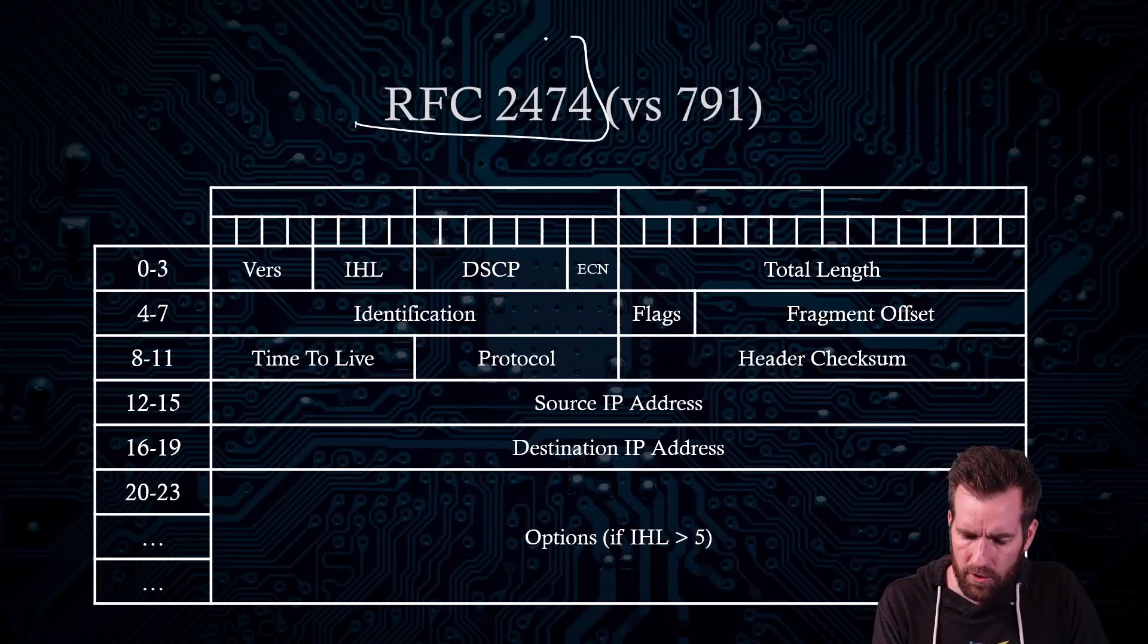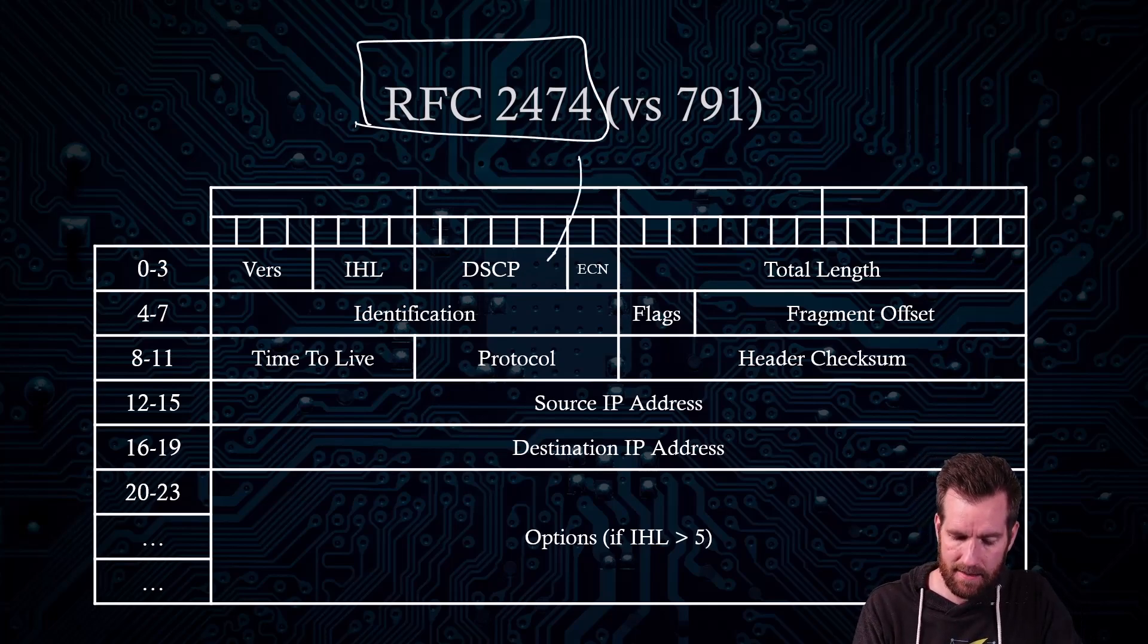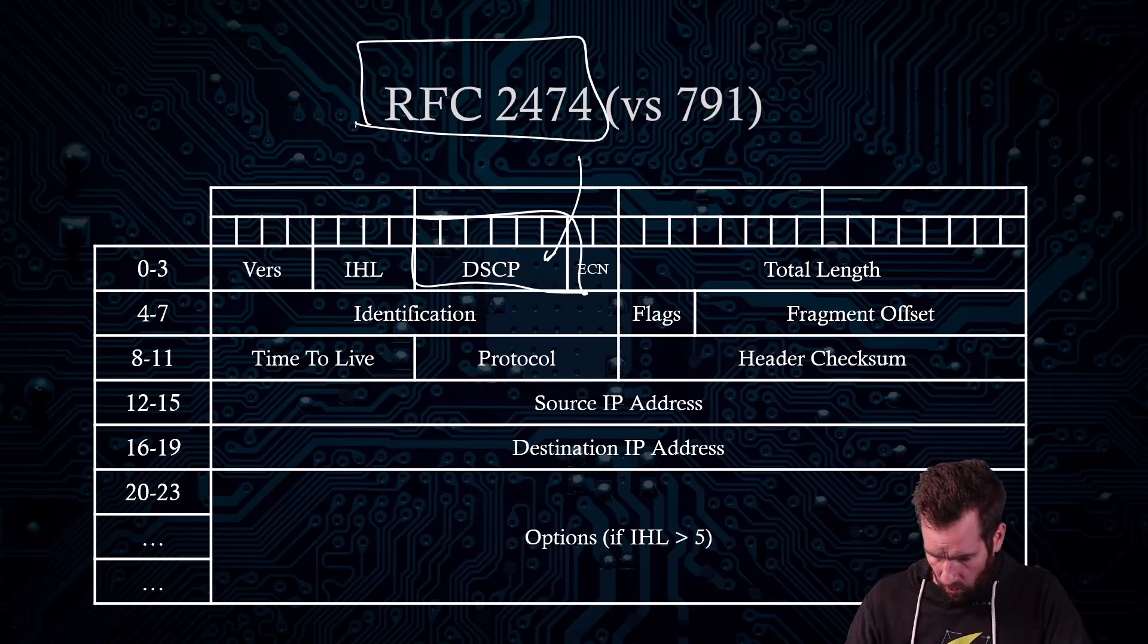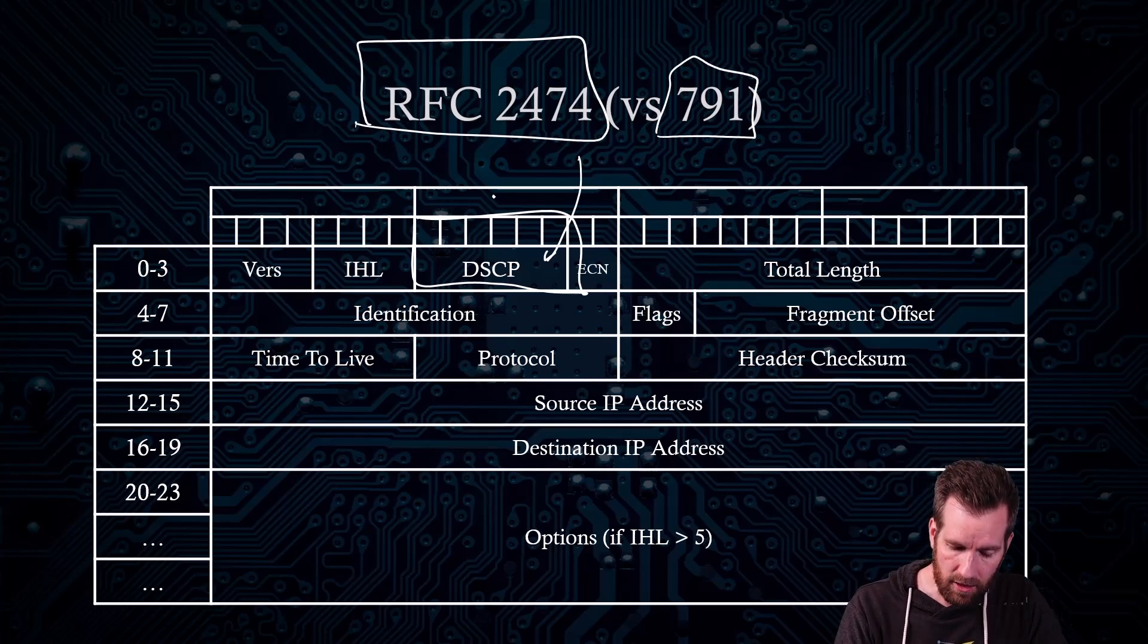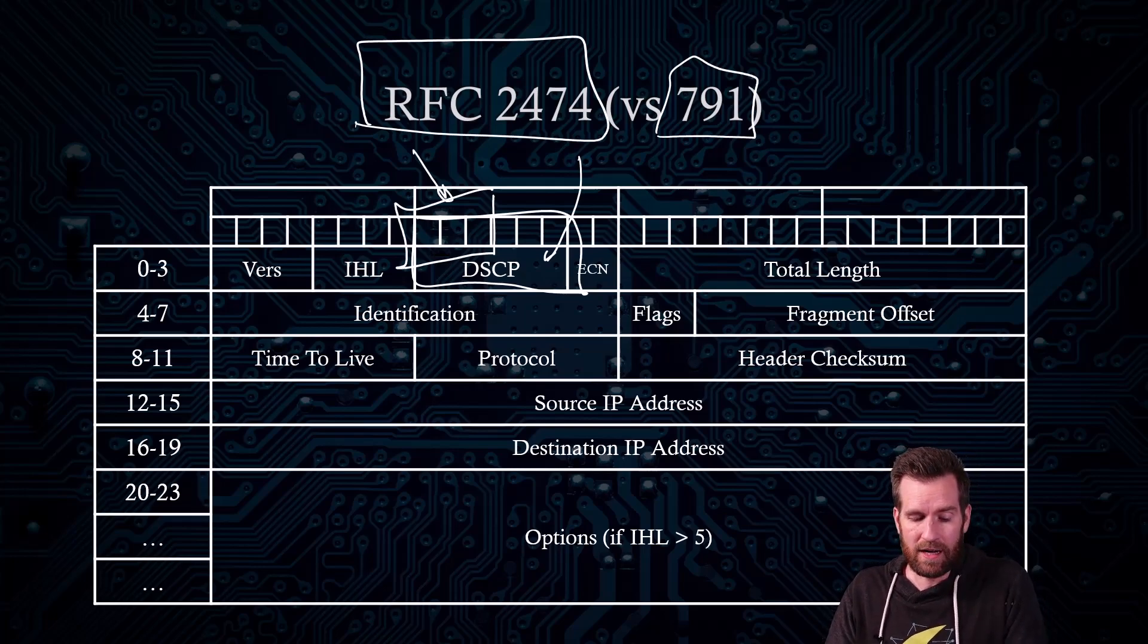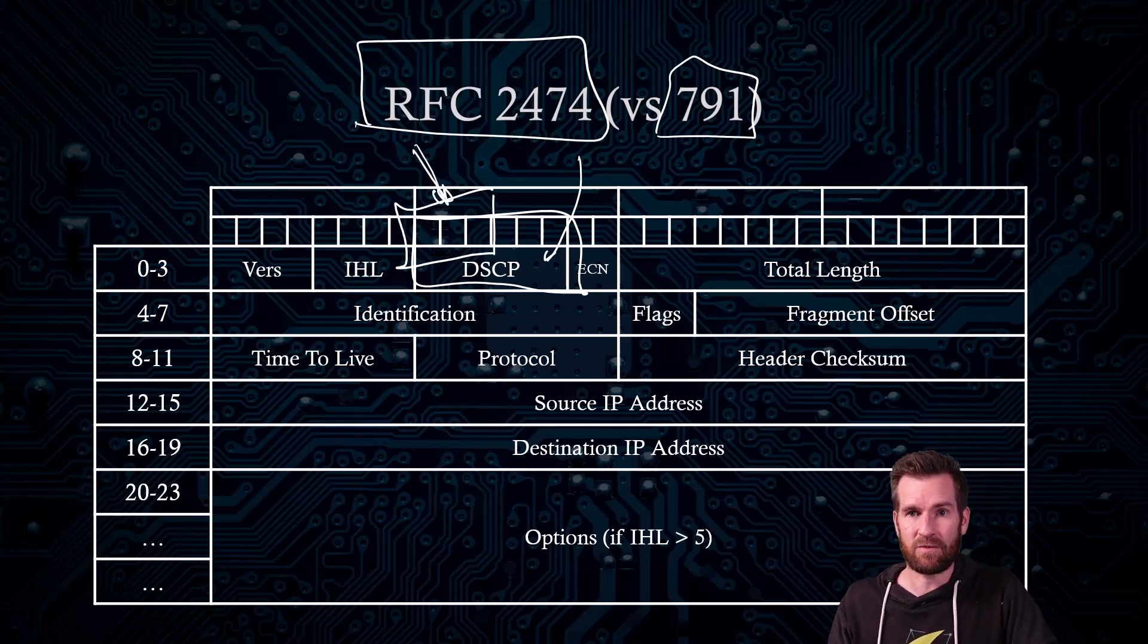RFC 2474 defines this DSCP field and we have these six bits here for this DSCP field. However, there was an older standard and that older standard was RFC 791 and it defined only three bits and we called this the precedence field. So what is the precedence of this packet? And so that term is still used when it comes to DSCP. We refer to these first three bits as the precedence field.